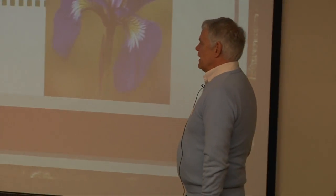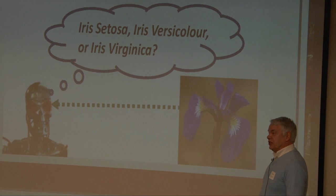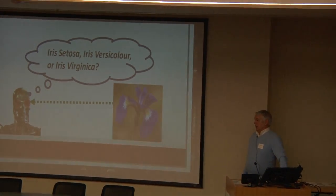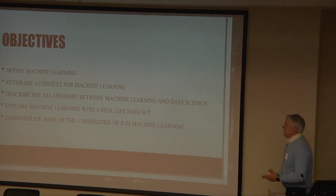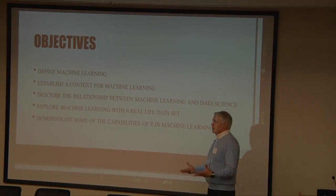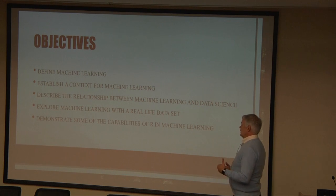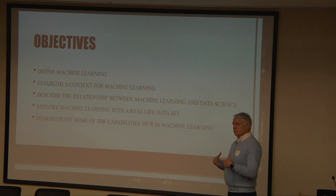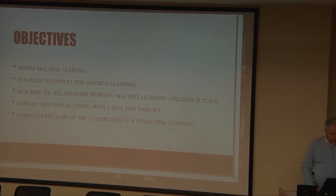Here's a picture of a machine trying to learn about classification of a flower. Classification is one of the key issues in machine learning, and the example we'll do has to do with classification. In my presentation, I'm going to define machine learning, set a context for it, talk about the relationship between machine learning and data science, and explore machine learning with a real-life data set using R.